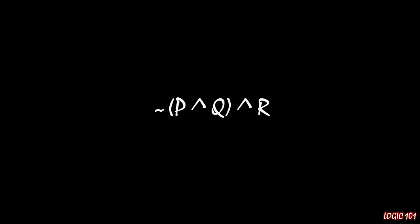Well, because we have three simple sentences, we have two to the third power, or eight different combinations. And because we have so many combinations, it might not be the easiest thing in the world for you to tell me whether this statement is true or false based off of those component parts being true or false.